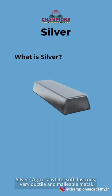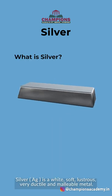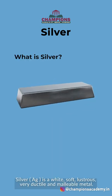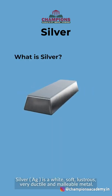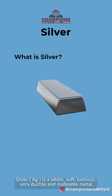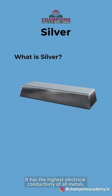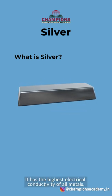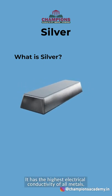What is silver? Silver is a white, soft, lustrous, very ductile and malleable metal. It has the highest electrical conductivity of all metals.